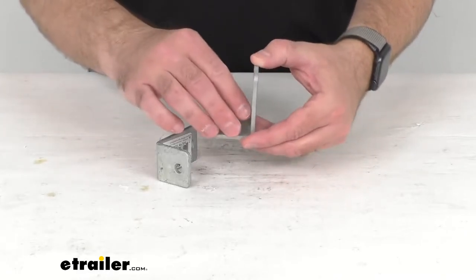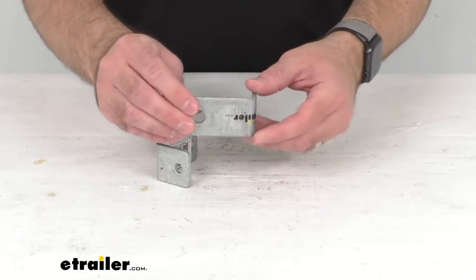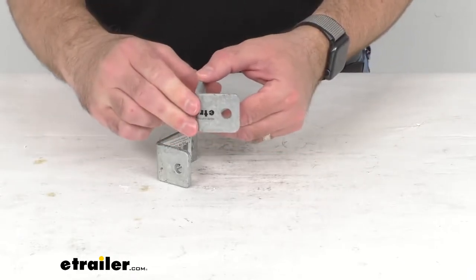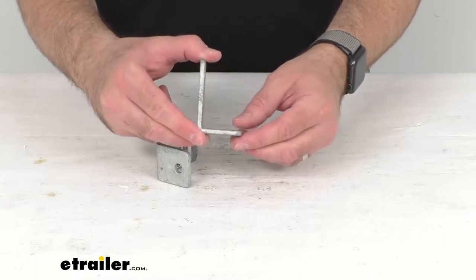This pair of L-shaped brackets make it simple to mount a roller precisely where you need it on your bow trailer.